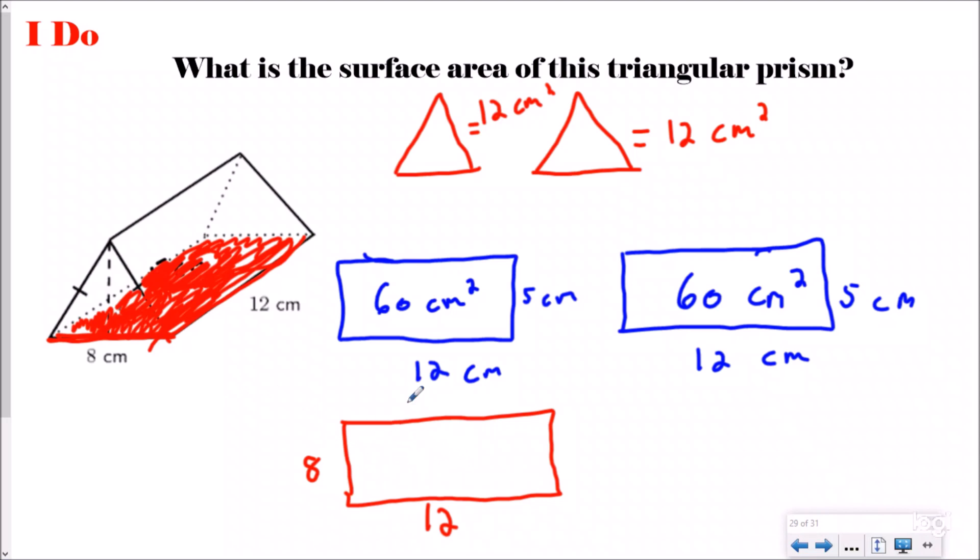So for this one, it'd be the length times width would be 12 times 8, which would be 96 centimeters squared. Just like our rectangular prism, our last step is to add up the area of all the faces.